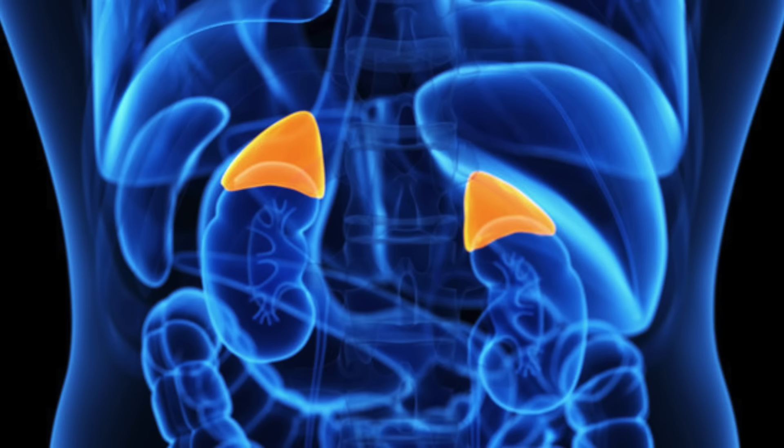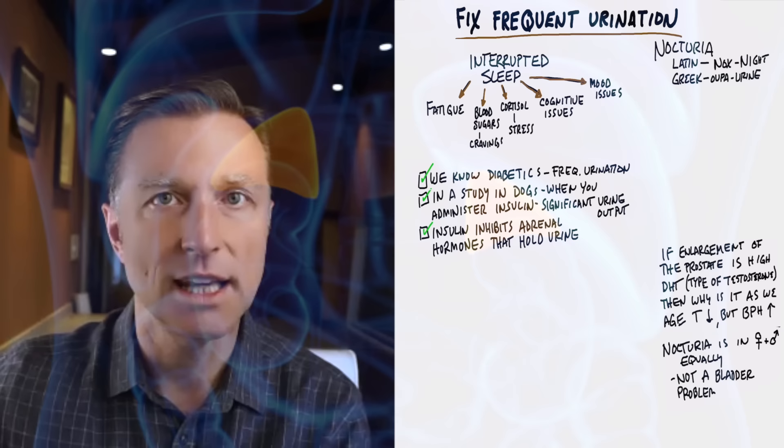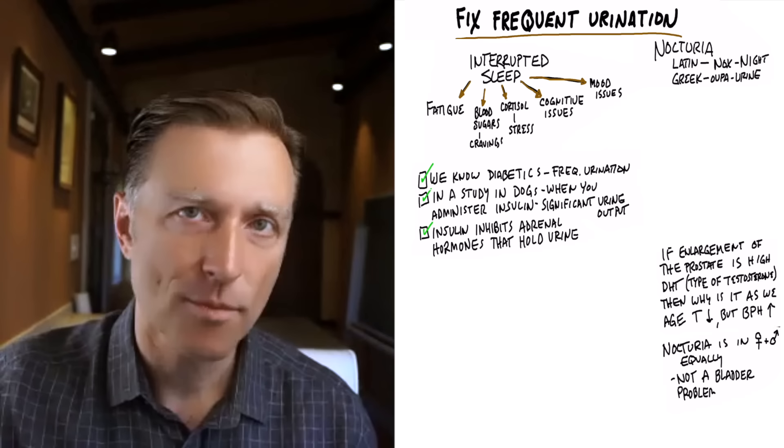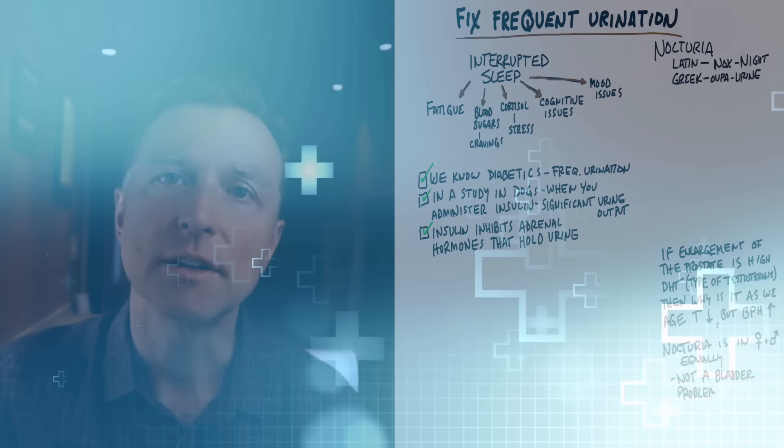Insulin inhibits the adrenal hormones that are supposed to hold urine. So the adrenals have a lot of different hormones and one of the hormones is supposed to retain fluid. Well, insulin blocks that hormone. So guess what's going to happen? You're going to release a lot of urine.